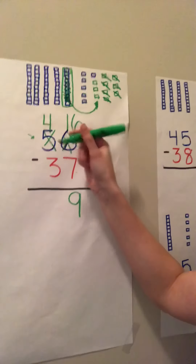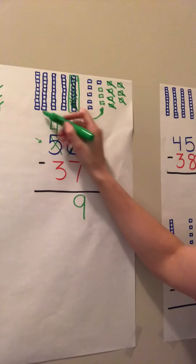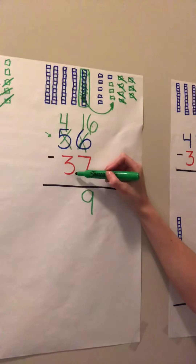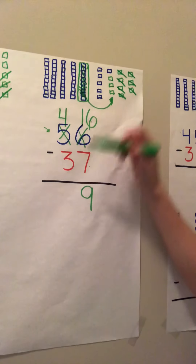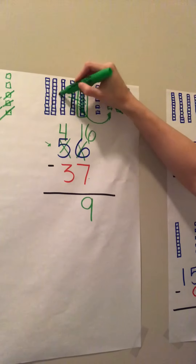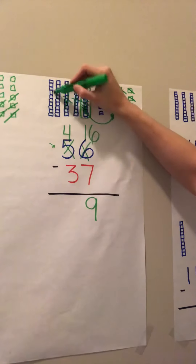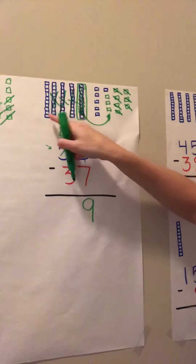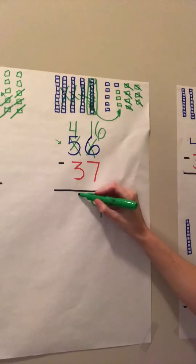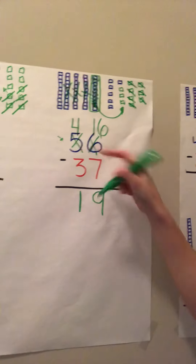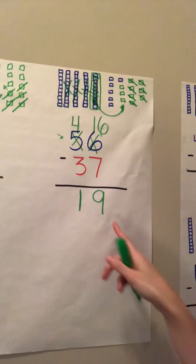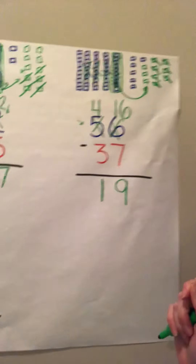Now we're moving to our tens. We have our four tens. How many do we need to take away? Three. So I'm going to take one, two, three. How many do I have left? Great, one. So fifty-six minus thirty-seven equals nineteen.